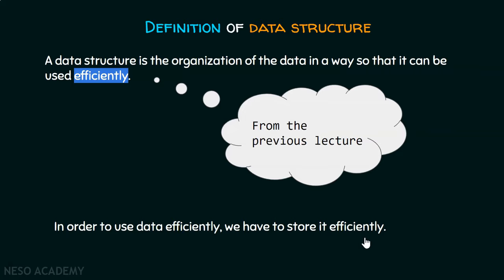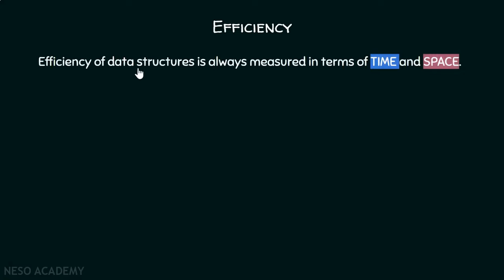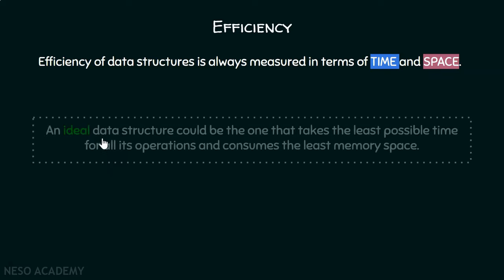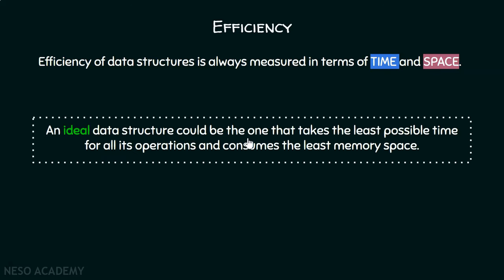Let's discuss efficiency in more detail. The efficiency of data structures is always measured in terms of time and space. An ideal data structure would be one that takes the least possible time for all its operations and consumes the least memory space. Both time and space should be minimized — then we can say a data structure is an ideal data structure.